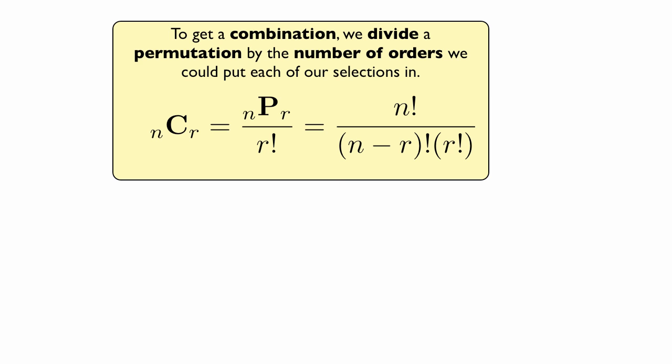Using the previous formula we learned yesterday, that's going to equal n factorial over (n minus r) factorial times r factorial.